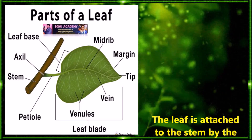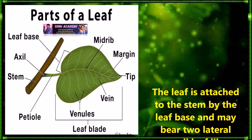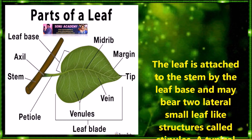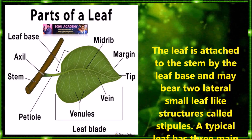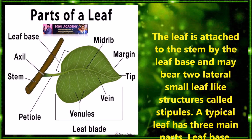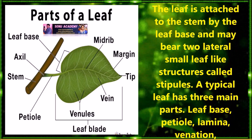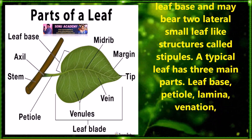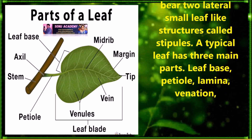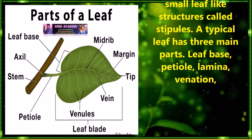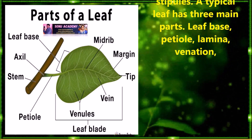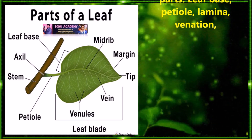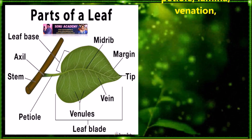Let us discuss the parts of a leaf. The leaf is attached to the stem by a leaf base and may bear two lateral small leaf-like structures called stipules. A typical leaf has mainly three parts: leaf base, petiole, and lamina and venation.